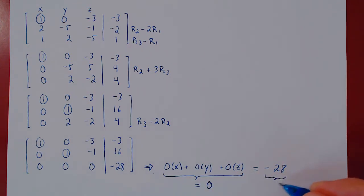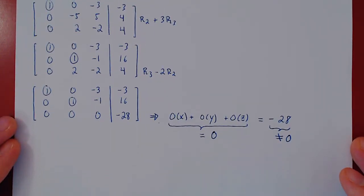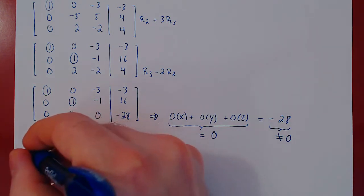the left-hand side of the equality is 0. But negative 28 is not 0. So the equation has no solution. No matter which real values you choose for x, y, and z, you will have to satisfy the equation 0 equaling negative 28. This is impossible. And so the linear system cannot be solved. Therefore, it has no solution.